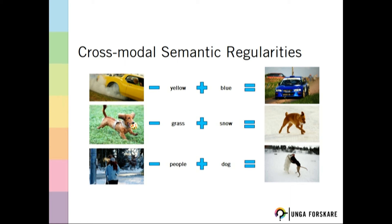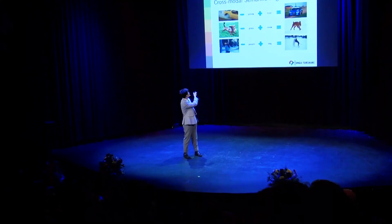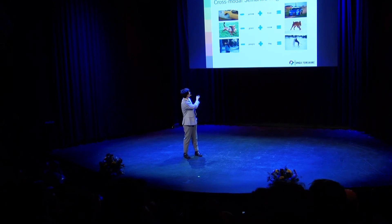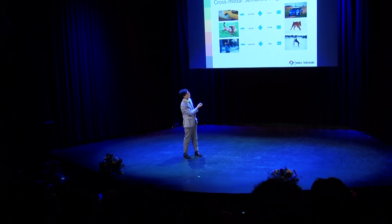One thing I like about this example is it preserves the fact that the dog is brown, and the fact that the people and the dog are actually in the snow. So actually, it can convey many meanings — the vector can capture multiple meanings in the sentences and words.